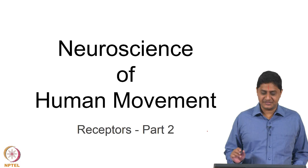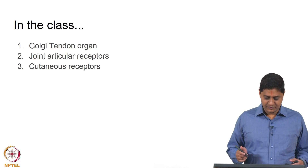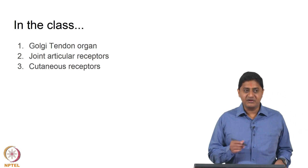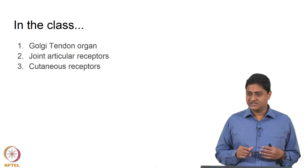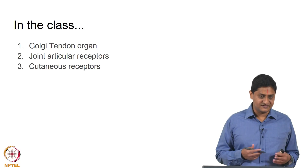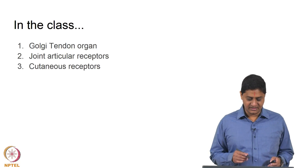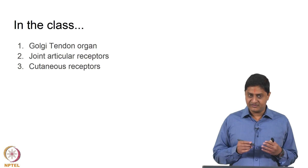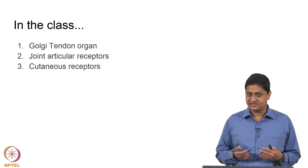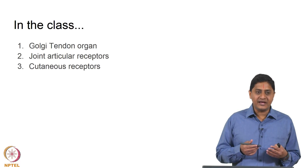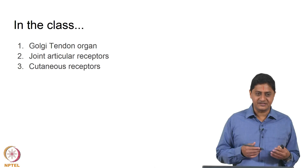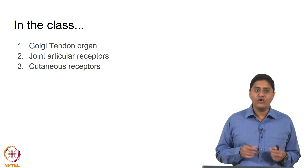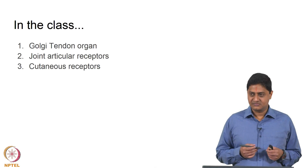Welcome to this class on receptors part 2. In this class we will be talking about Golgi tendon organs, joint articular receptors, and some cutaneous receptors. In the previous class we saw muscle spindles and how they serve as length and velocity sensors. In today's class we will see a different sensor. In the case of the muscle spindle, the intrafusal fiber responsible for sensing length is aligned in parallel with the force-producing extrafusal fibers. But is there some way in which I can know the force produced by a muscle — can I know the tension in the muscle? That is the question.